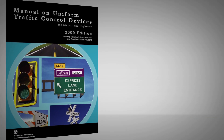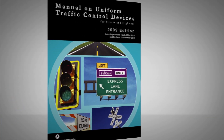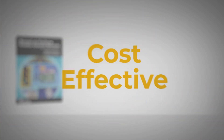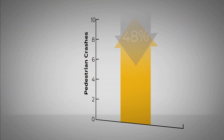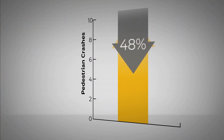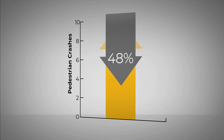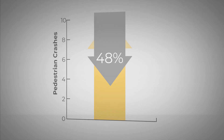The Manual on Uniform Traffic Control Devices, or MUTCD, offers many cost-effective crosswalk visibility enhancements that can reduce pedestrian crashes by up to 48%. Let's walk through a few.